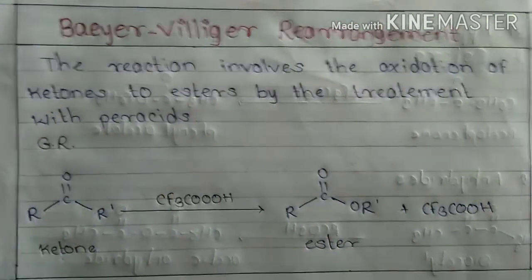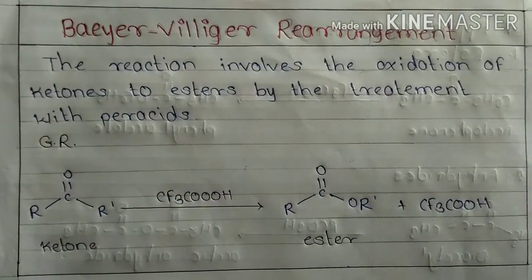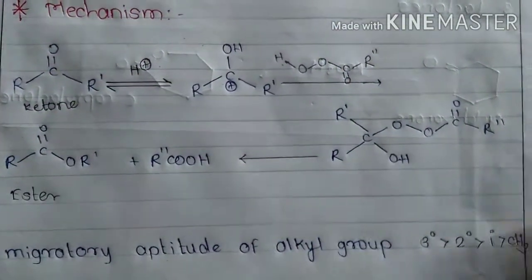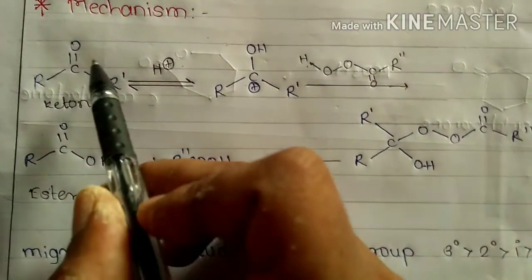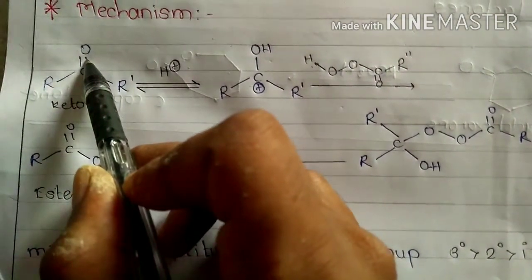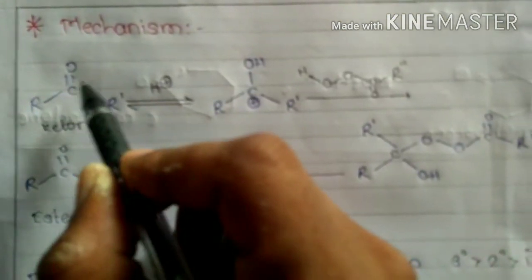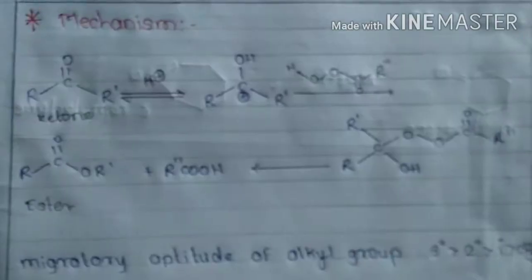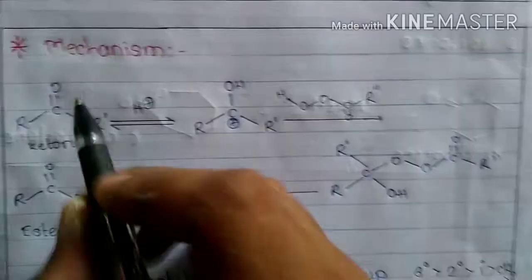So let's talk about the mechanism of Baeyer-Villiger rearrangement. Firstly, carbonyl double bond takes H+ from the peracid like this.